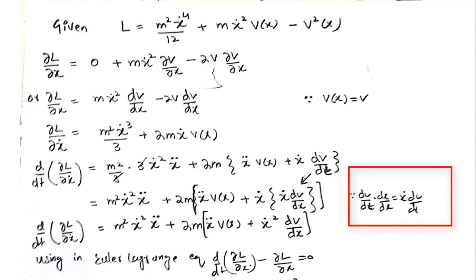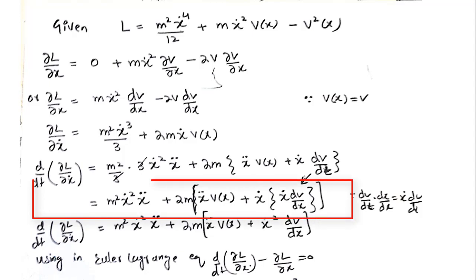Since we know that dv by dt can be written as dv by dx times dx by dt, this dx by dt is x dot and we get dv by dx. So in short I can write this x dot dv by dt as x dot x dot dv by dx.